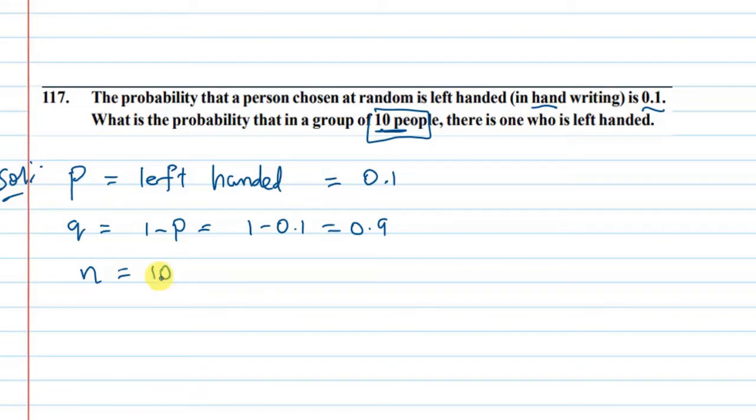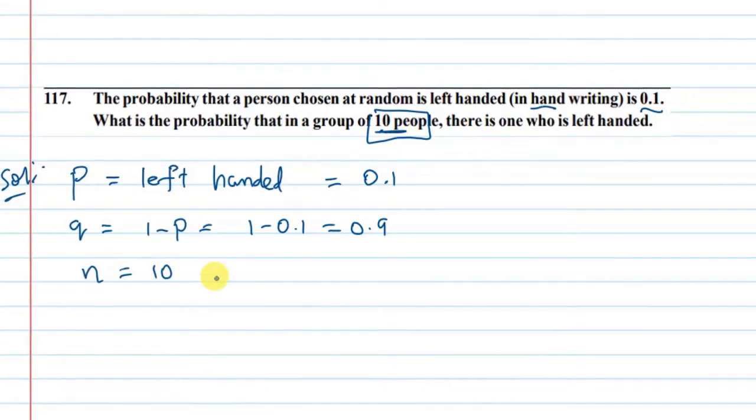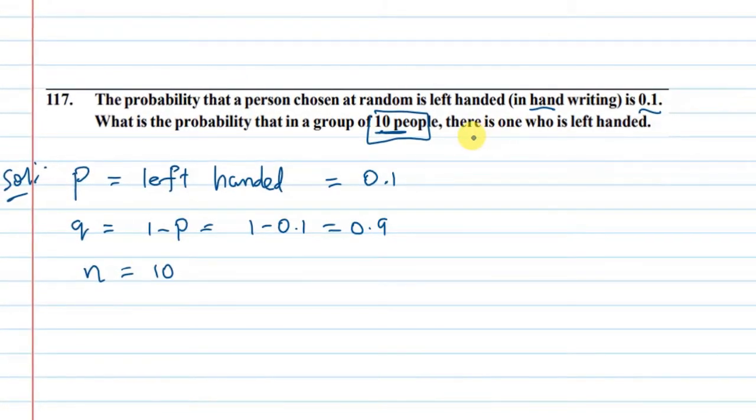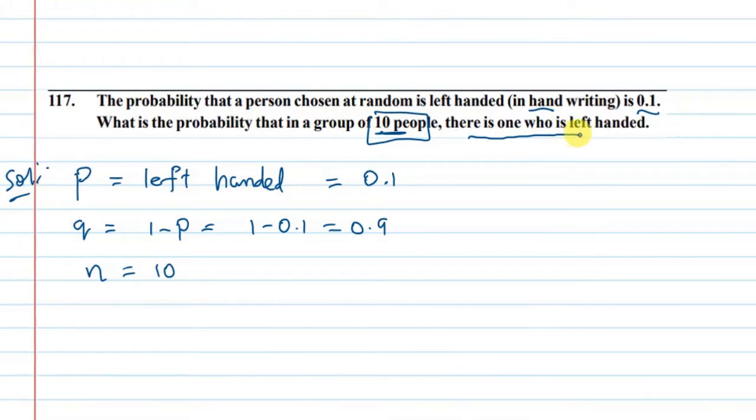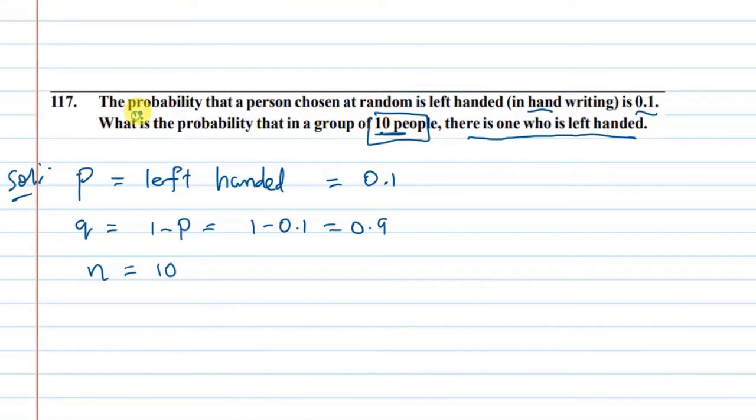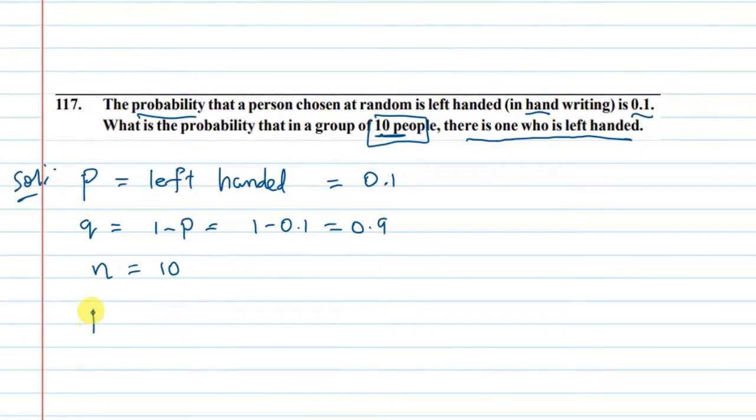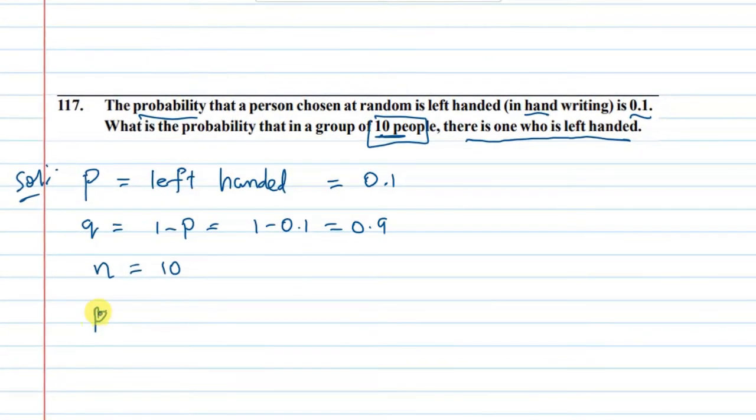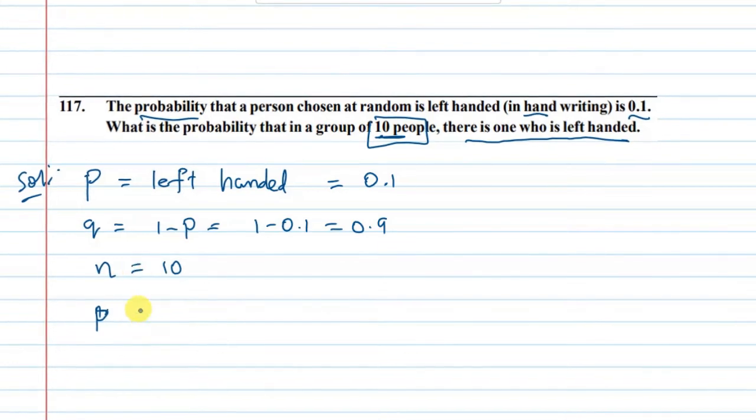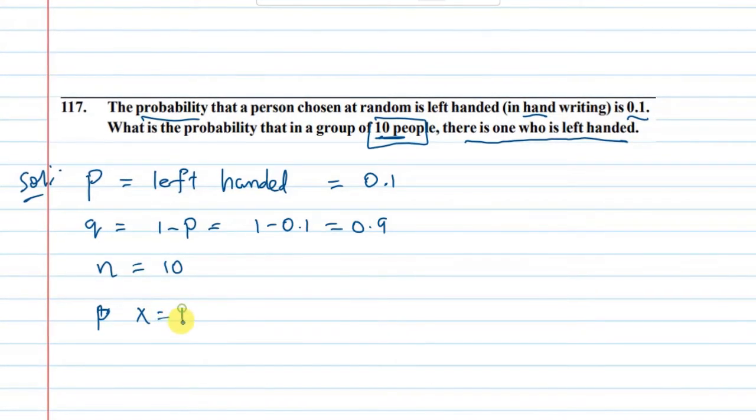The trials are 10. Now, there is one who is left-handed. The probability is P of X equals 1.